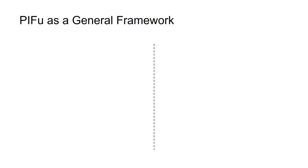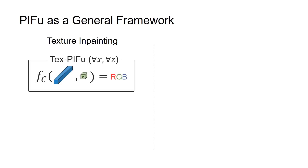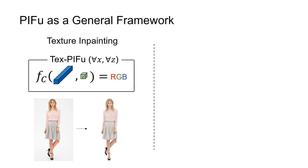Furthermore, PIFU is a general framework. PIFU can learn not only the scalar probability field, but also a continuous vector field in 3D space, such as RGB color. This allows us to extend PIFU to a texture inference framework, TextPIFU, which can predict texture at any point on the surface with an arbitrary topology, which is desirable for clothing.